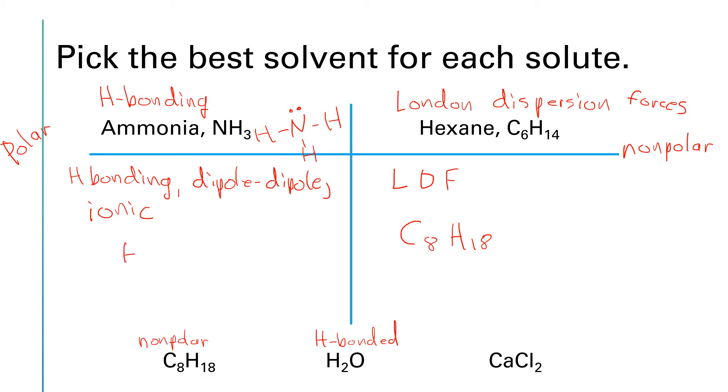So we would put water over here in this category. It would dissolve most readily in ammonia. And then last but not least, we have calcium chloride. This is a metal plus a nonmetal, which means it's ionic. And being ionic, we would expect it to dissolve in a polar solvent or ammonia. So CaCl2 would go over onto this side.